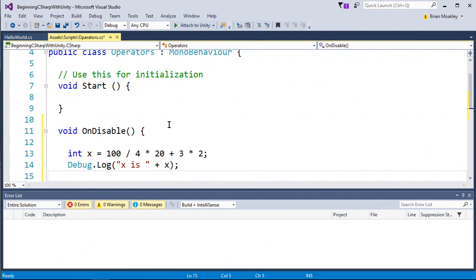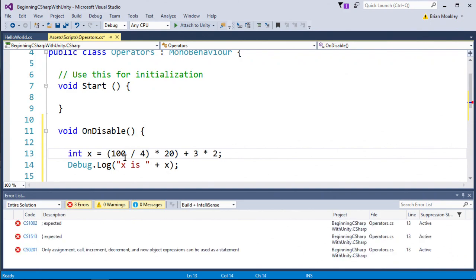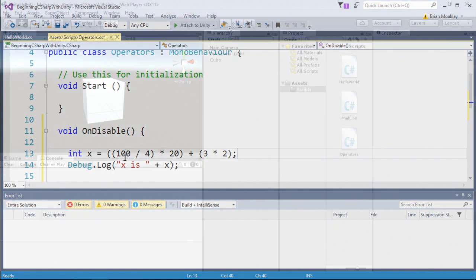Now, this is somewhat sloppy. And the way we can make this a little better is using parentheses. So we can say 100 divided by 4. And in this case, we can put another parentheses over here, like so. And then we can put a parentheses around this. Now, again, the statement is running the exact same way. But now the programmers know exactly what's going to happen first.